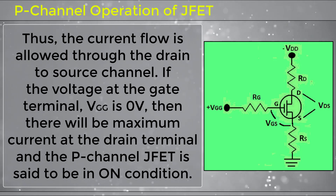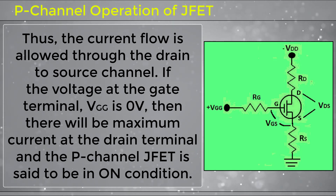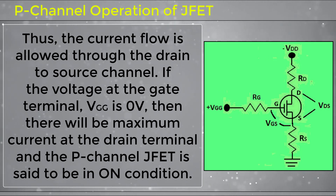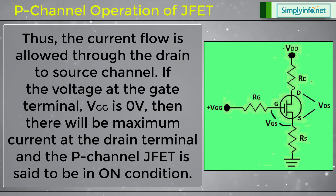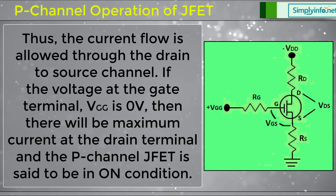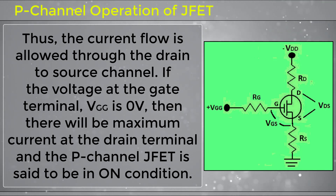If the voltage at the gate terminal VGG is 0V, there will be maximum current at the drain terminal and the P-channel JFET is said to be in the ON condition.